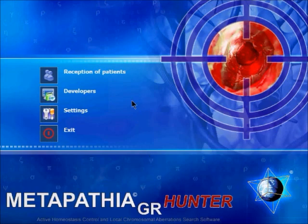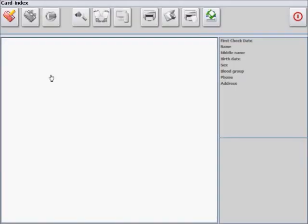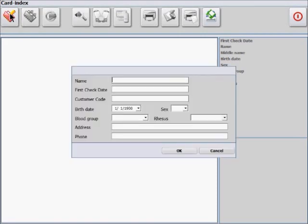Here we begin by entering the reception of patients, and we are at the card index. We can begin by selecting the new card and entering patient information. For example, John Smith, first check date 2011 September 20th, birth date January 1st 1988, male, blood type O, rhesus plus. After the information is entered, press OK,